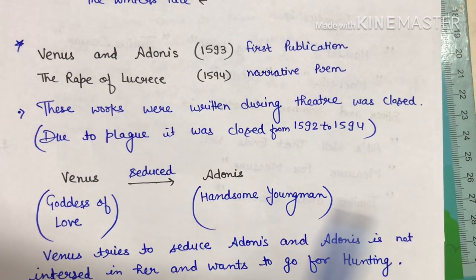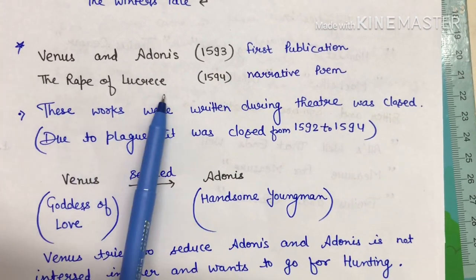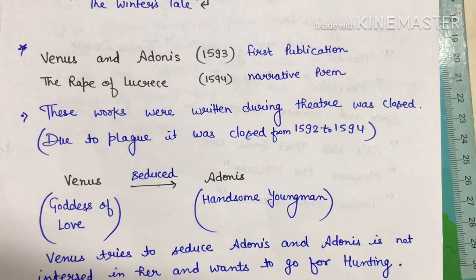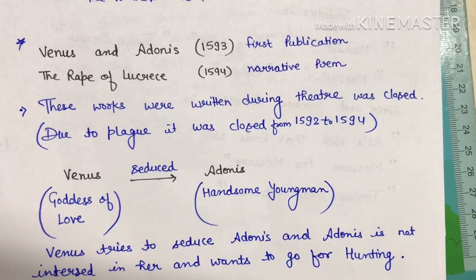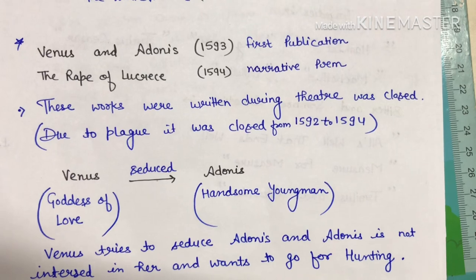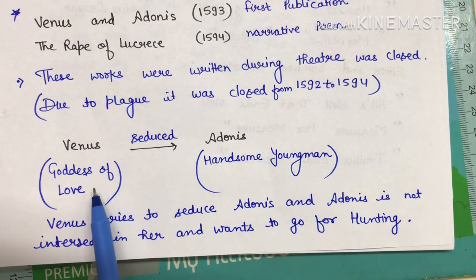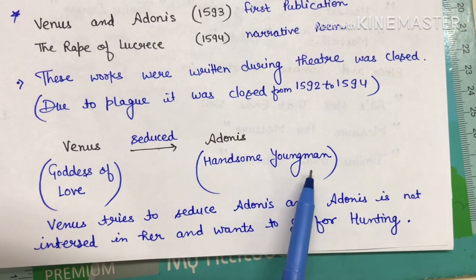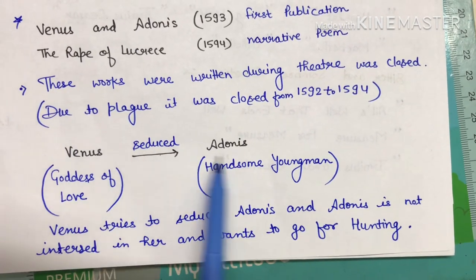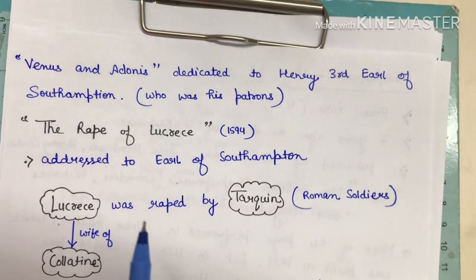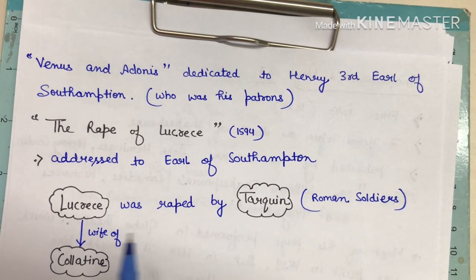Shakespeare's long narrative poem Venus and Adonis was written in 1593, and in 1594 he wrote The Rape of Lucrece. These long narrative poems were written when the theatre was closed due to plague, from 1592 to 1594. In Venus and Adonis, Venus is the goddess of love who tries to seduce Adonis, a very handsome young man who is not at all interested in Venus.